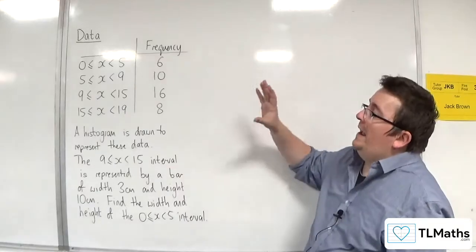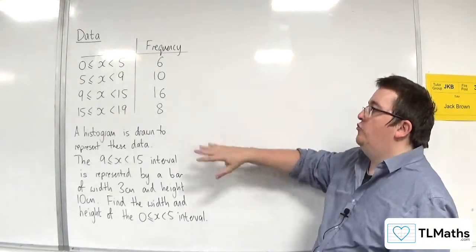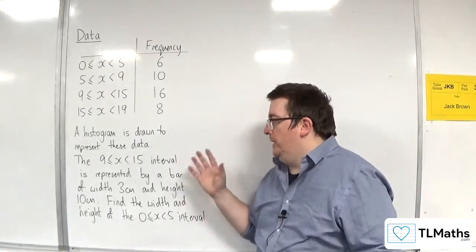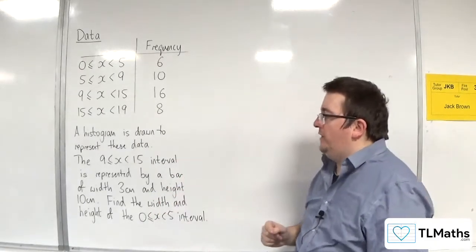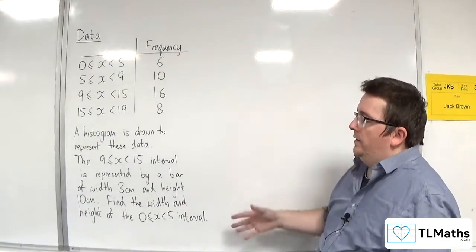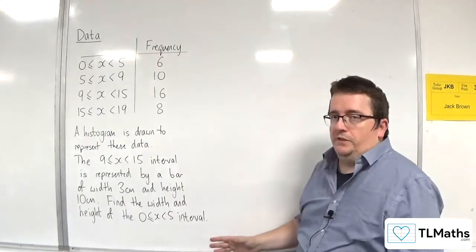So, in this problem, we have some data, and a histogram is drawn to represent it. The 9 to 15 interval is represented by a bar of width 3 centimeters and height 10 centimeters. Find the width and height of the 0 to 5 interval.